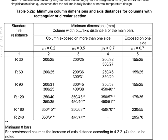Previously, we talked about the minimum dimensions and the axis distance of the beam and the slab. Now, we're going to look into the minimum dimensions and the axis distance for the columns.